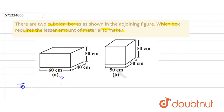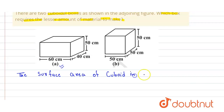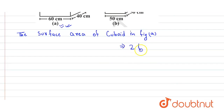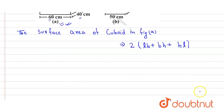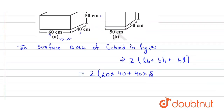The surface area of the cuboid in figure A equals two into length into breadth, plus breadth into height, plus height into length. Here 60 cm is the length, 40 cm is the breadth, and 50 cm is the height. So we put in the values: 2 into (60 into 40) plus (40 into 50) plus (50 into 60).